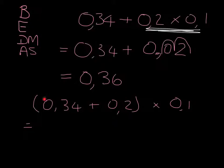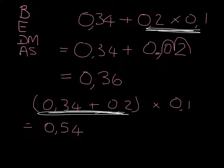In other words, when we're doing this one, the place where we're going to start is by doing this stuff in brackets first. So let's do the calculation. 0.34 plus 0.2 is going to give us 0.54, and we still have to multiply by 0.1.